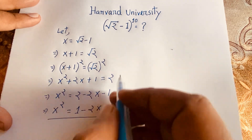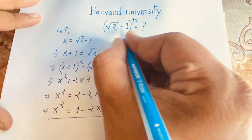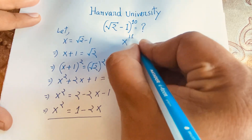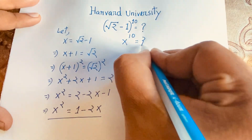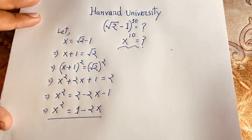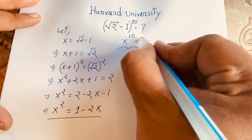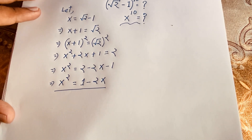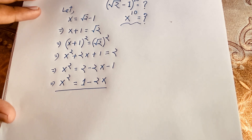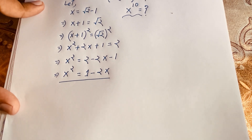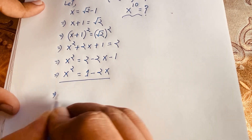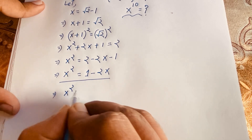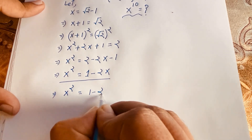Our target is x to the power 10. Because of that, we note x² = 1 - 2x. Now I use both sides whole square again to build toward higher powers.